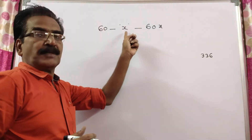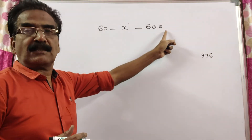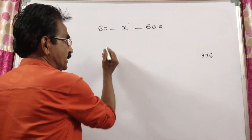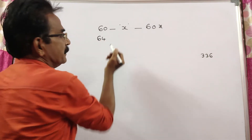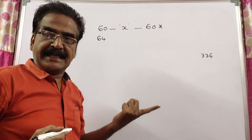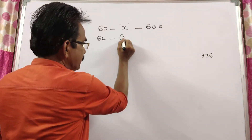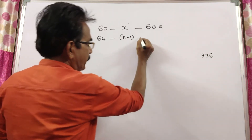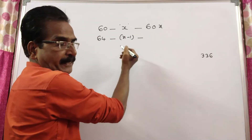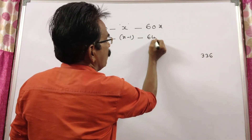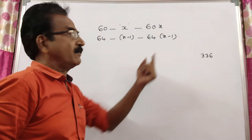The average cost of 60 books is X. Then the total cost of 60 books is 60X. If he purchased 4 more books, the average price is reduced by 1 rupee — that is, it becomes X minus 1. So the total cost now will be 64 into (X minus 1).